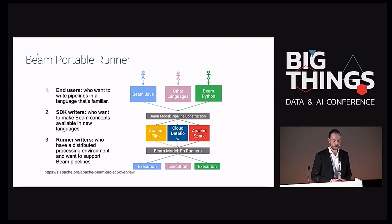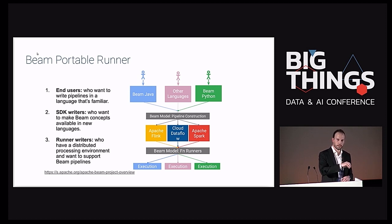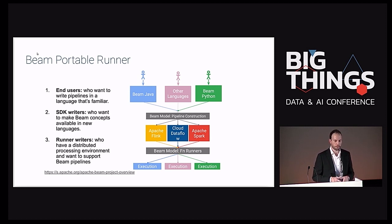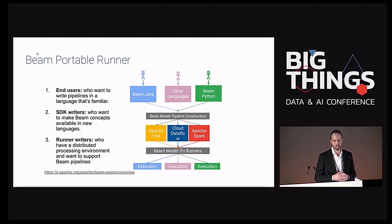The idea with the portable runner is that you implement your program in Python. This program will be converted into a pipeline that will be executed by the runner — you can choose Apache Flink, Dataflow, or Spark. The actual execution will be pushed down to each machine, so you can distribute your execution on a scalable engine across the cluster. This needs a lot of manual labor to run, and there are many things needed to make it fit your production-ready needs.